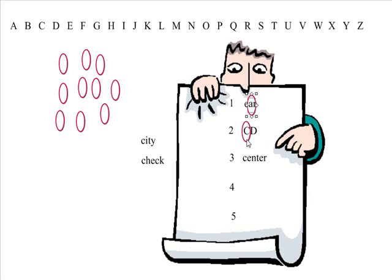We're going to look at the A in car. And we're going to look at the D in CD. And instead of looking at the C in center, we're going to move over to the second letter and look at the E.